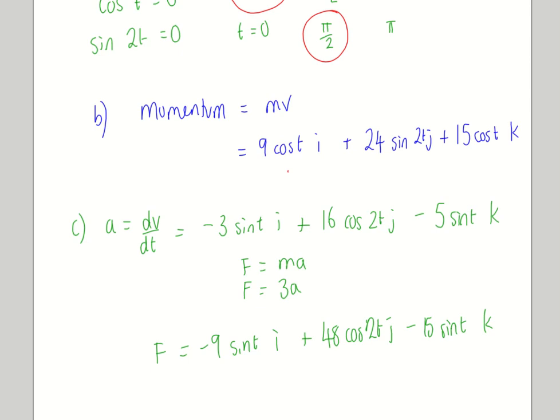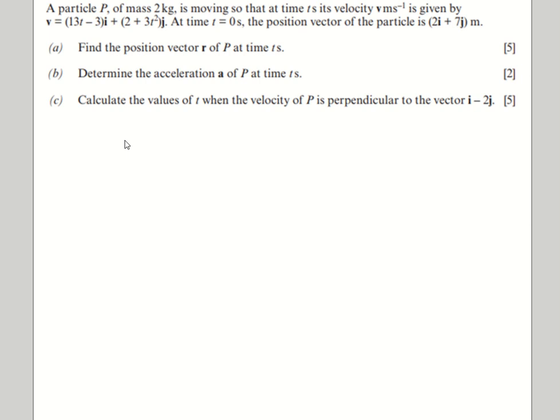I'll do one more in this video and then I'll make a separate one. So the next question we've got. We're starting with a velocity vector this time. And we've been given some extra information at the top. So it says when the time is zero, the position vector is 2i plus 7j. The only reason they would be telling us that is so we can work out our constants after we've integrated. So that's going to be our first job actually.